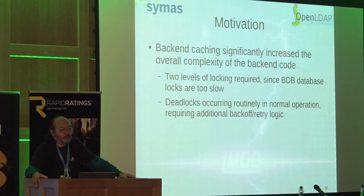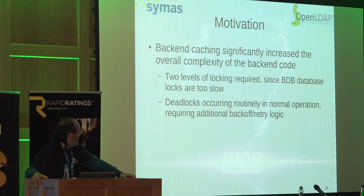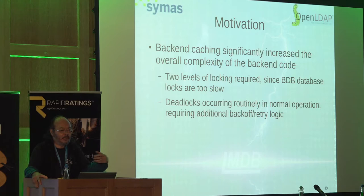Multiple layers of caches also means multiple layers of locking to keep data consistent moving between layers. In the normal progress of operations through Berkeley DB, you ran into deadlocks almost all the time — it was just a routine error code. You'd back off and retry. That's just the way things were done.